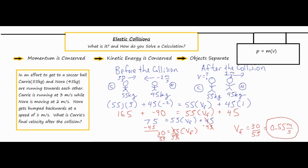If you were approaching this from an energy point of view, you would do basically the same thing — draw a picture, get your numbers organized. The only difference is instead of using mass times velocity for momentum, you would use the kinetic energy formula: one half M V squared in each spot. Fill in your known variables and solve for the unknown with a couple of algebraic steps. I hope that was helpful in understanding and calculating an elastic collision problem. Thank you for watching and listening.